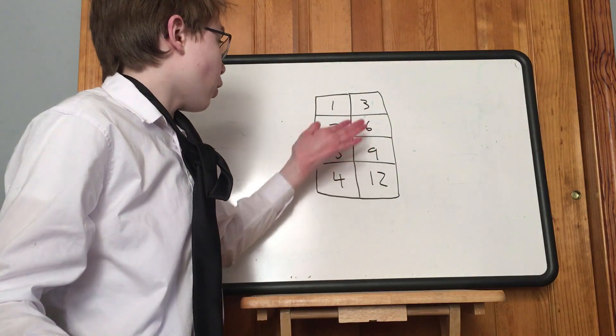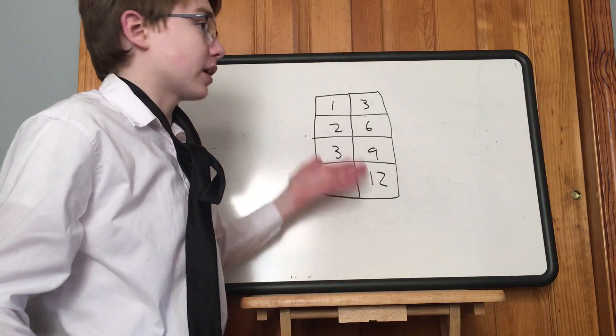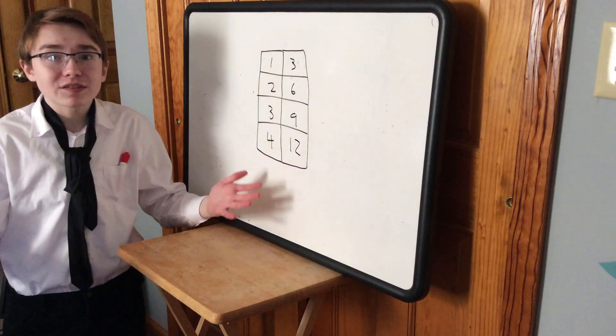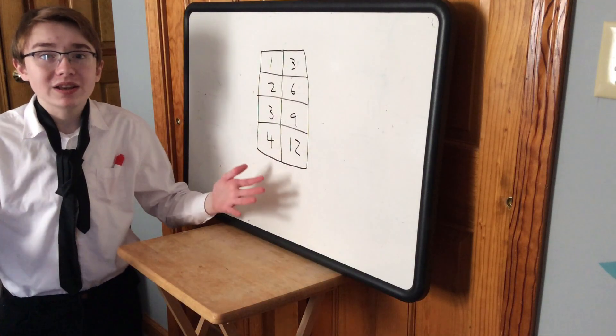It's because these numbers all change at a constant rate — the constant of proportionality. Let's count by twos: 2, 4, 6, 8. Simple, right?